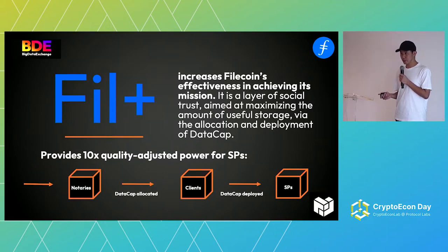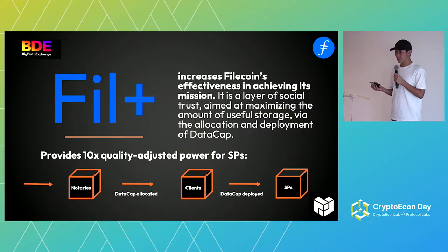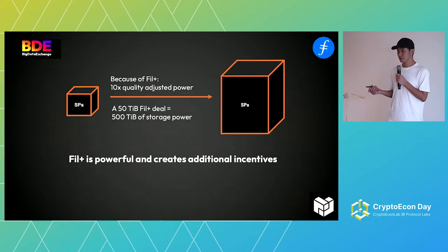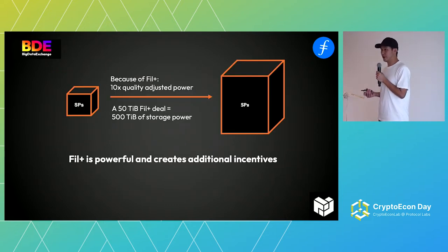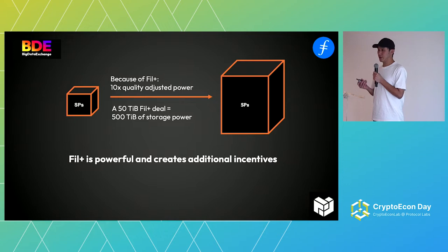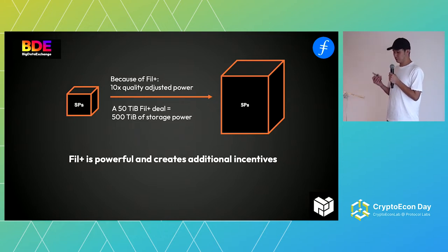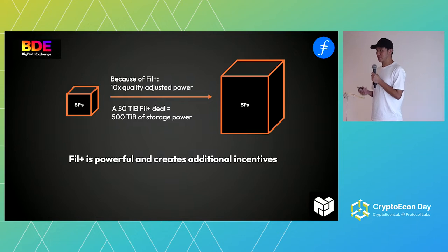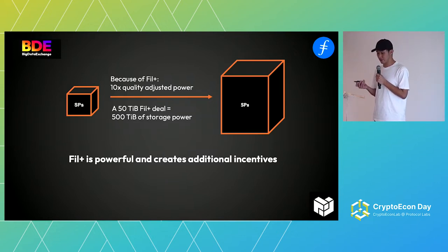When a storage provider has this data cap, they receive a 10x boost to their quality-adjusted power — they're essentially doing the same thing but getting 10 times more power. For example, a 50 TiB FIL+ deal will equate to 500 TiB of storage power. So that's very powerful.